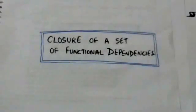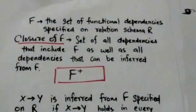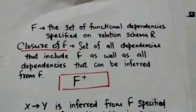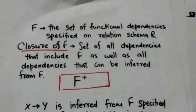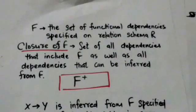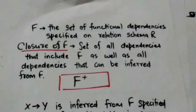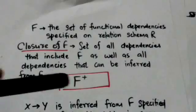Welcome back. In this tutorial we will study about closure of a set of functional dependencies. Let F be a set of functional dependencies specified on relation schema R. The set of all functional dependencies that include F as well as all dependencies that are inferred from F is called the closure of F, and it is denoted by F+.